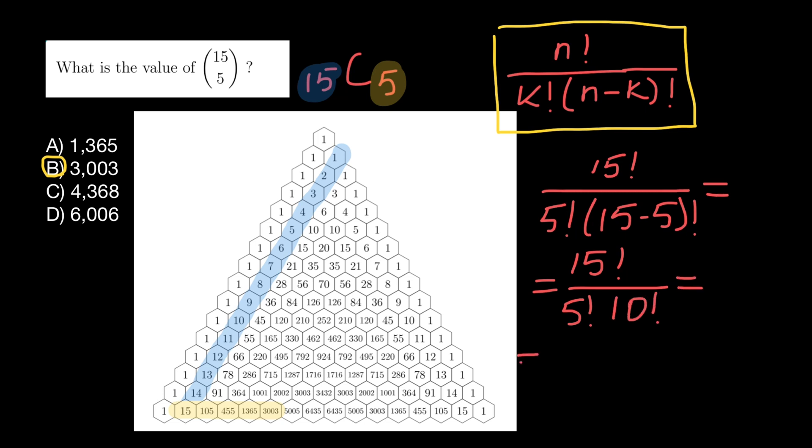We can represent 15 factorial as 15 times 14 times 13 times 12 times 11 times 10 factorial.